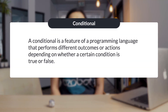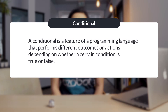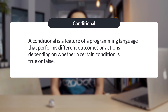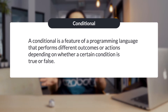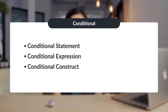A conditional is a feature of a programming language that performs different actions or outcomes depending on whether a certain condition is true or false. Simply put, a conditional is if-then logic, similar to cause and effect. A conditional can also be called a conditional statement, a conditional expression, or a conditional construct.